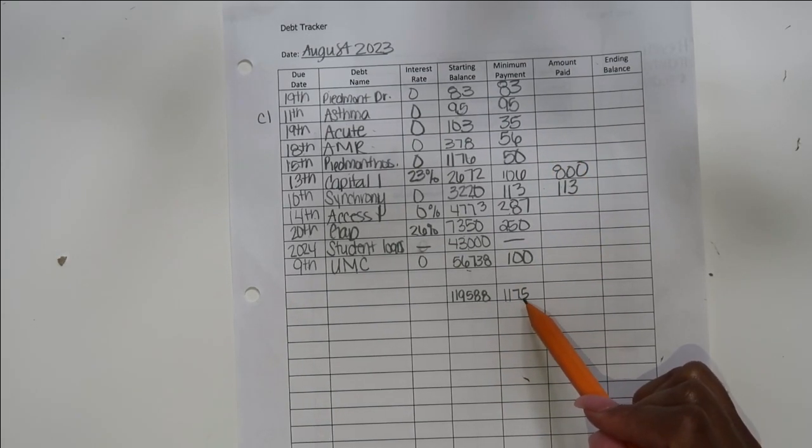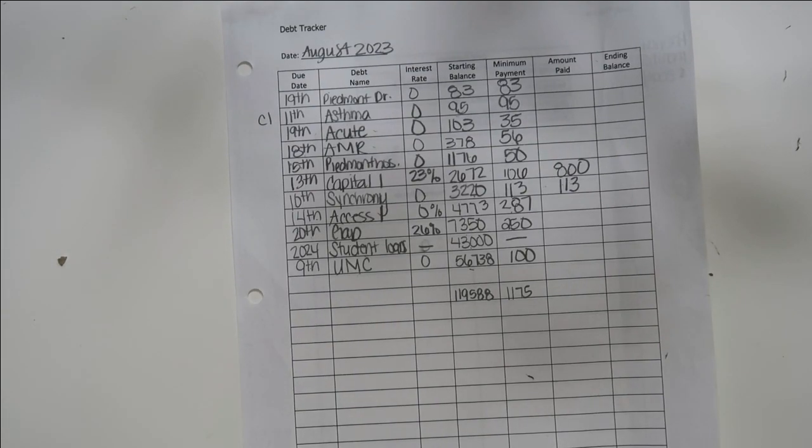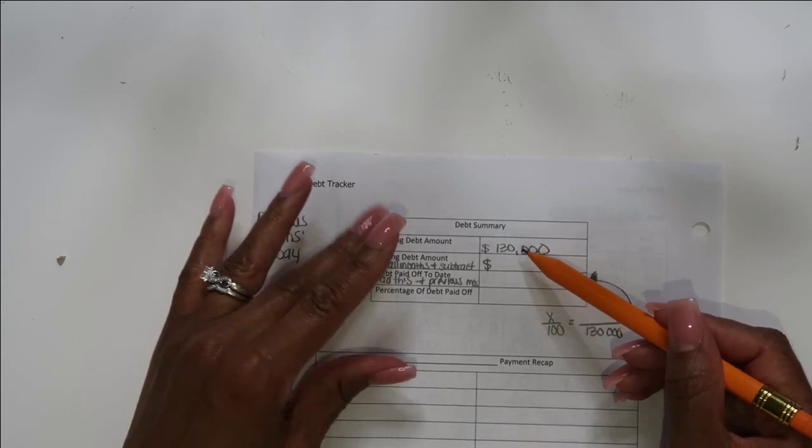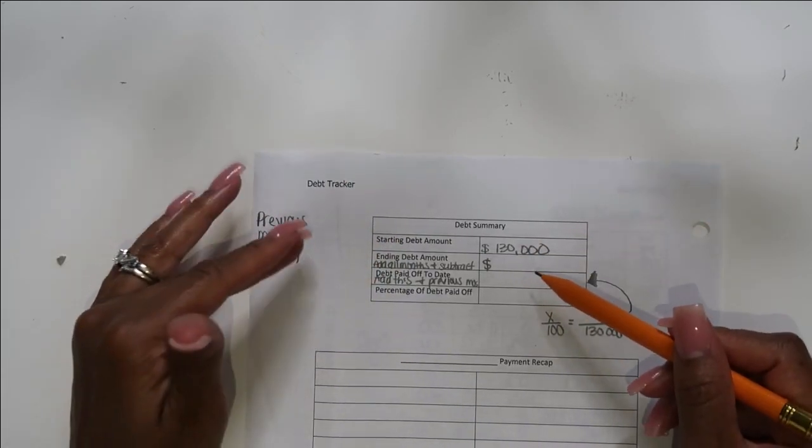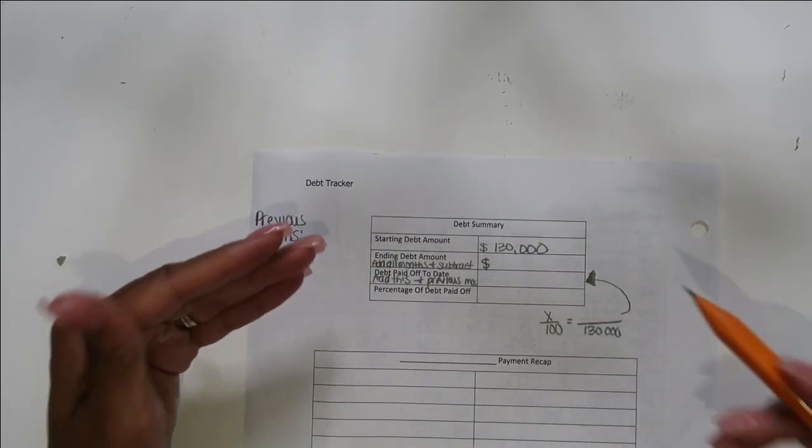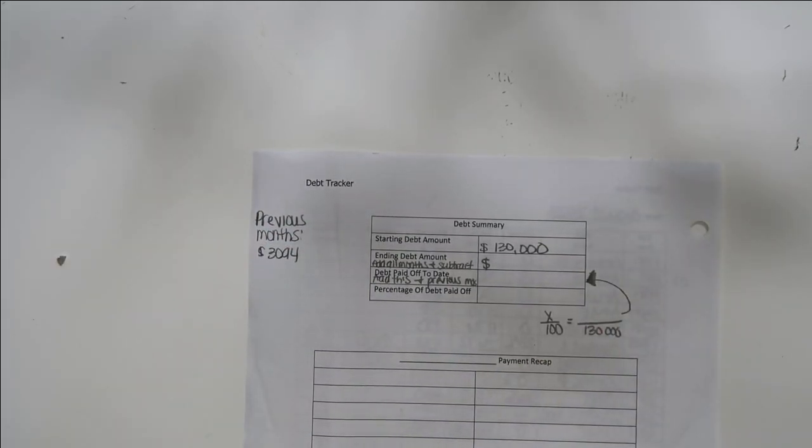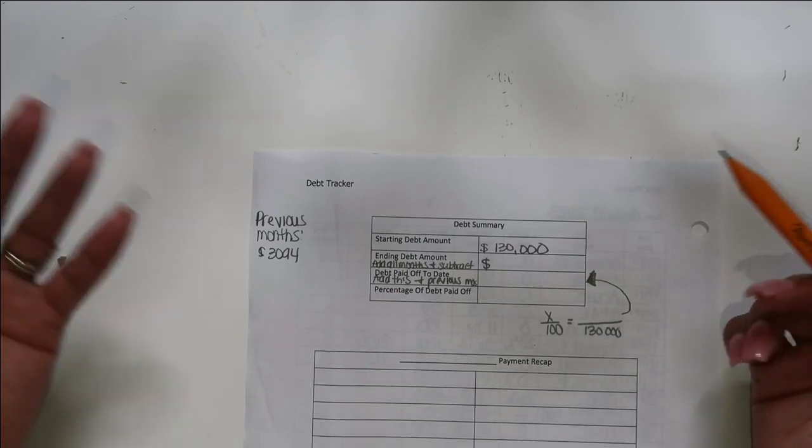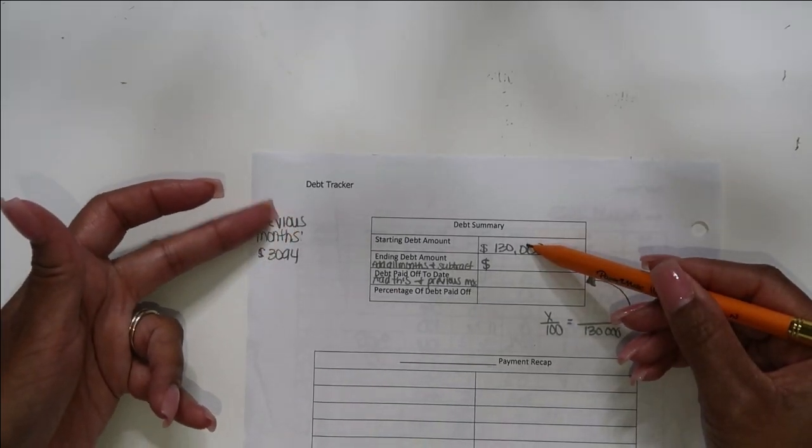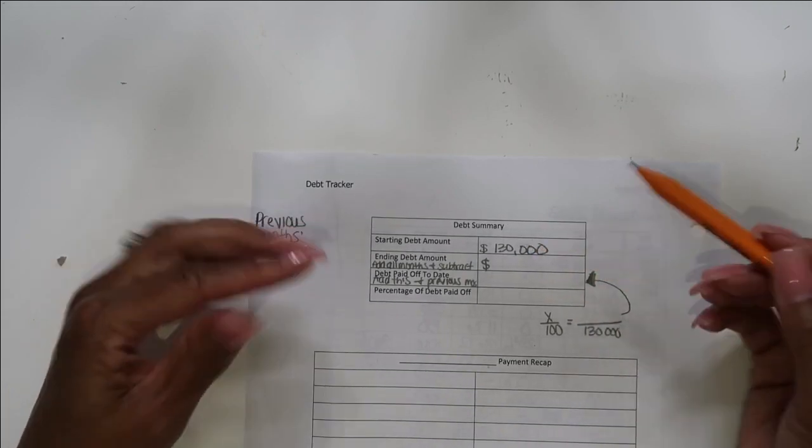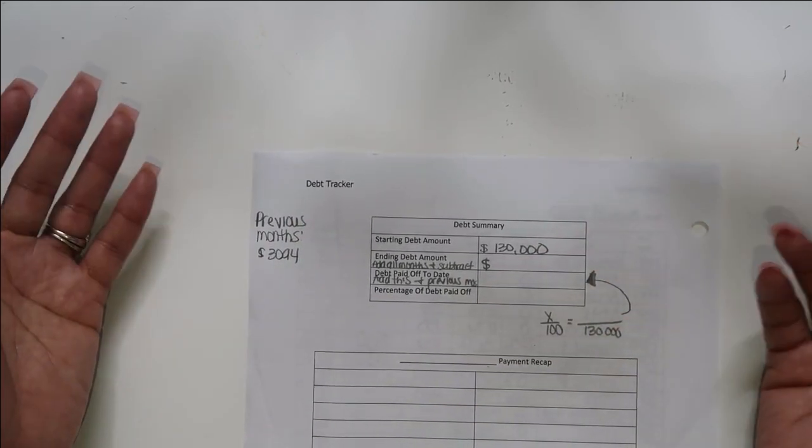All of these totals up to $119,588. My minimum payment that I'm gonna pay towards this month is $1,175. So now I'm going to go over to my starting debt. I rounded my starting debt up to $130,000 simply because of interest rates for some of them. I didn't want to round it to $120,000 simply because it's going to be more and I still have doctor bills coming in. Previous months I paid $3,094 so far once I started all over.